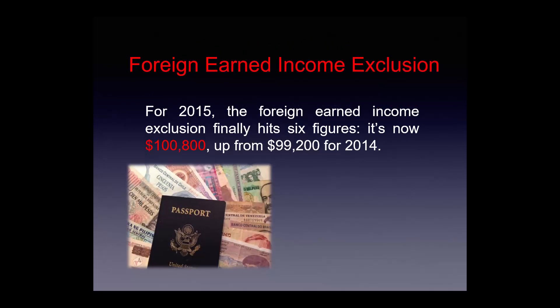For the foreign earned income exclusion, 2015 marks the first time it has hit six figures — it's now $100,800, up from $99,200 for 2014.